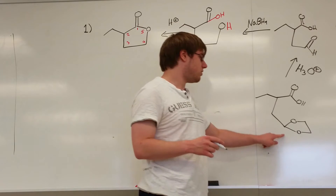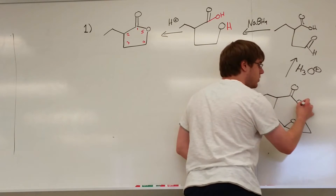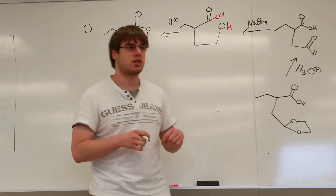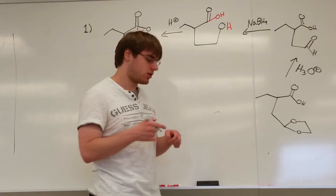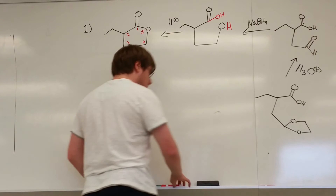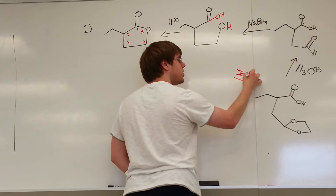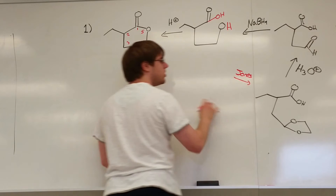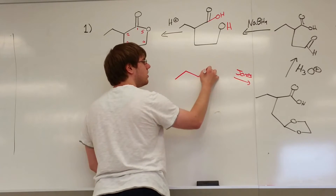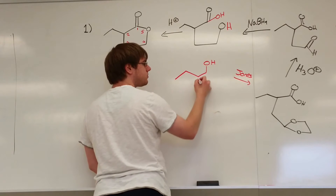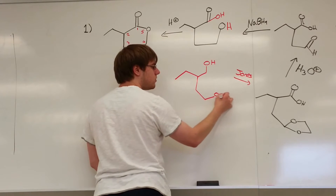You have two options: you can either use the carboxylic acid to cut right away, or you can turn it into an OH first. If you were to turn it into an OH, you would have to use Jones reagent because Jones is the only thing strong enough to turn an OH into a carboxylic acid. If you went the Jones route, you would do this — OrgoBeast would remain unchanged.